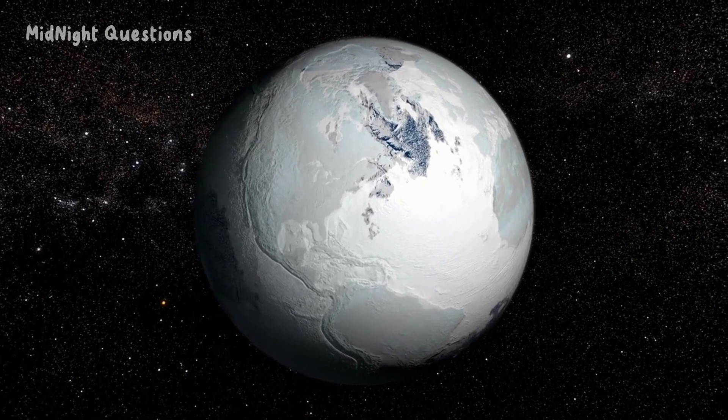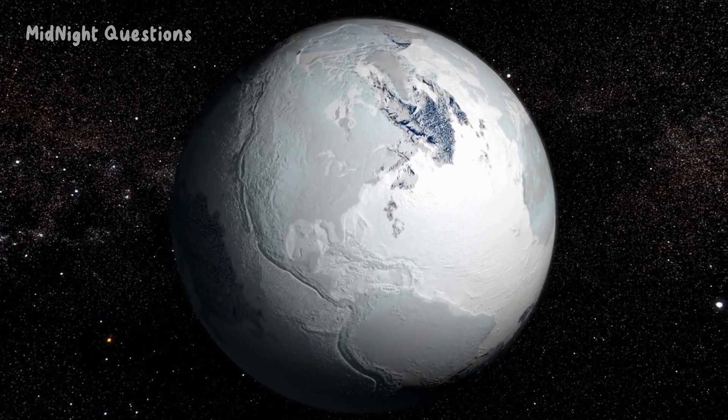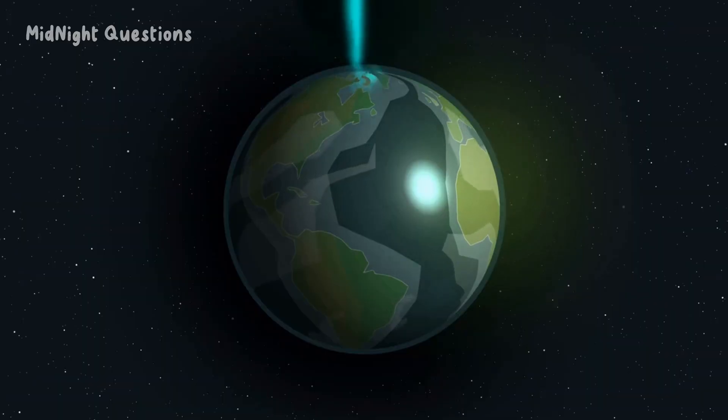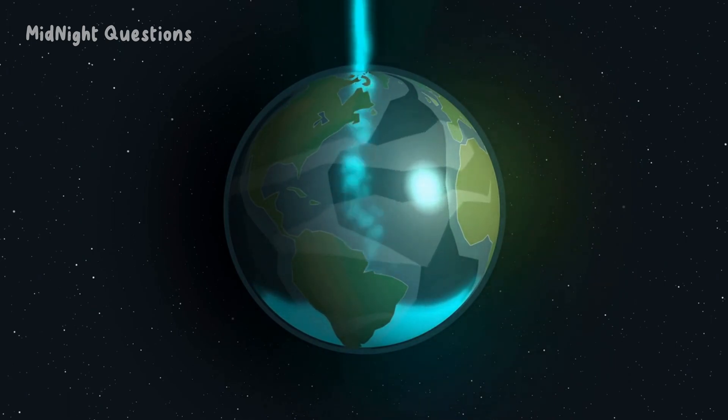However, it's also possible that some species might not be able to adapt to the changing environment, leading to their extinction. As mentioned before, catastrophic events or human activity could also lead to the extinction of many species, which would have significant consequences for the planet's ecosystem.